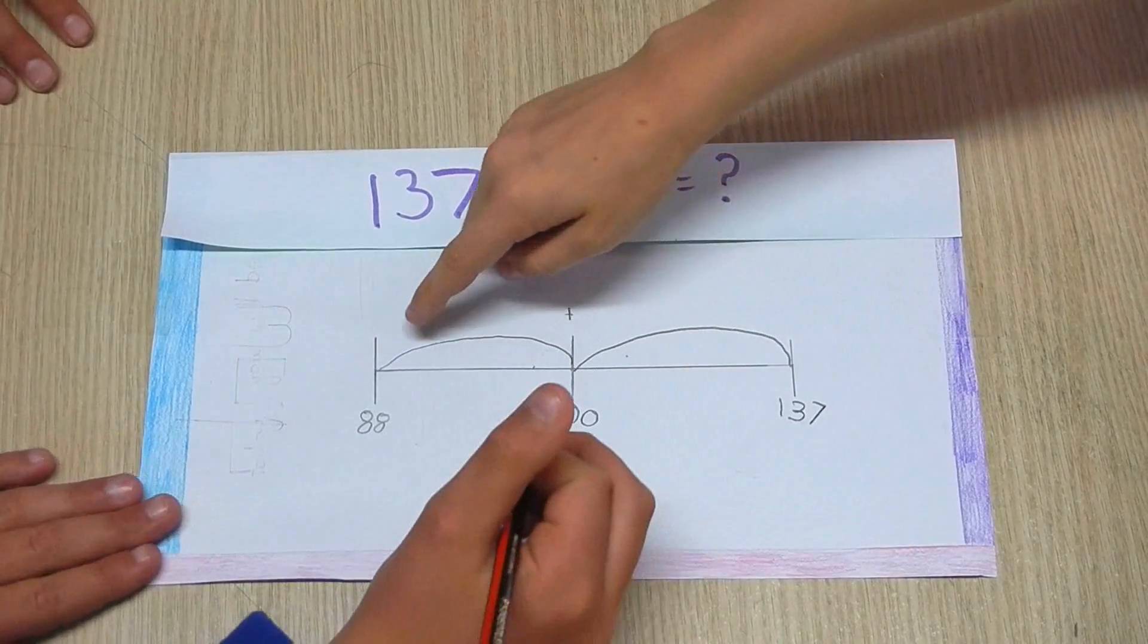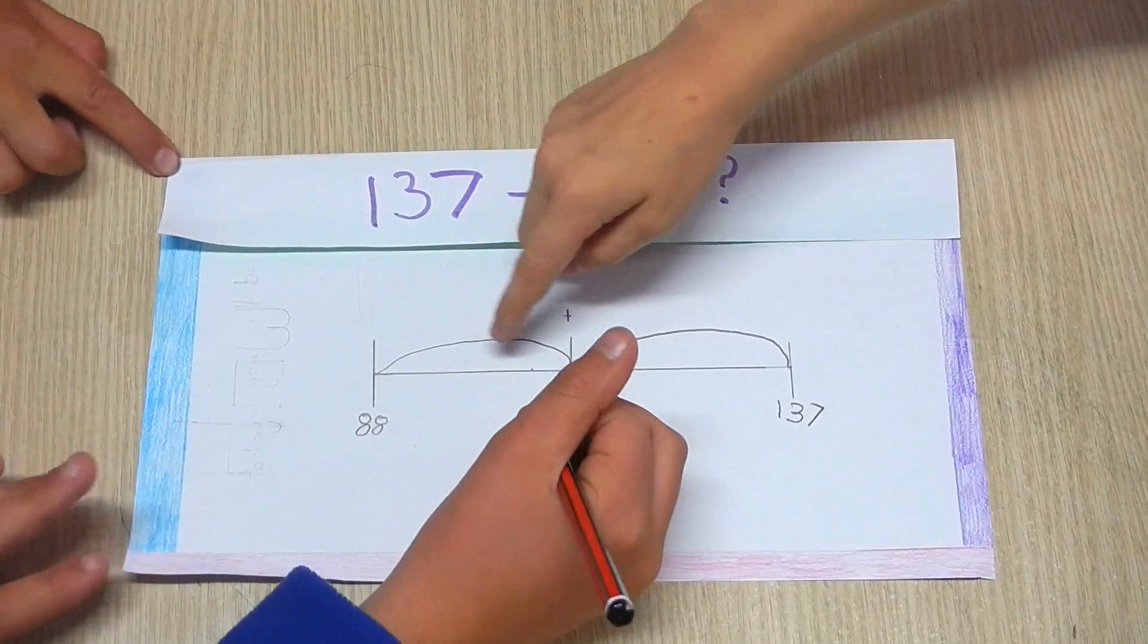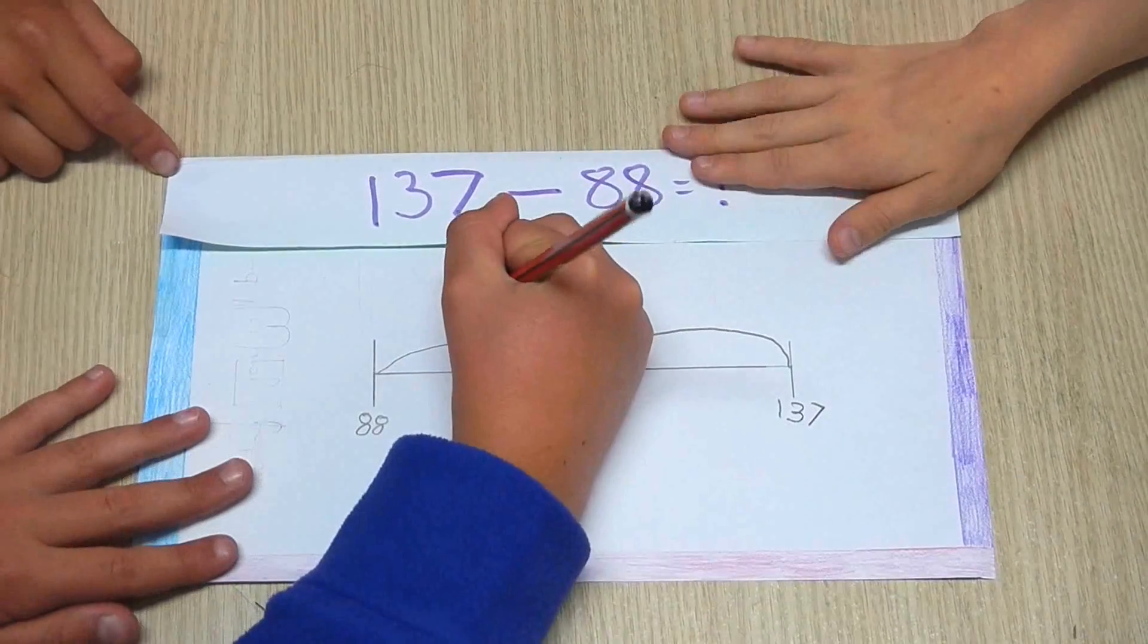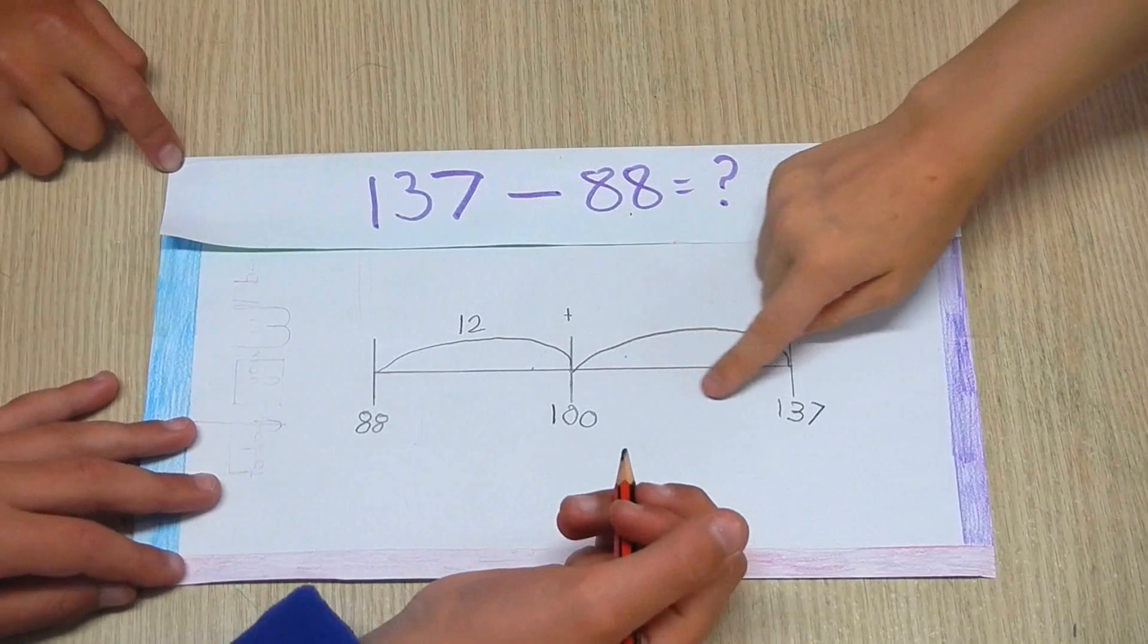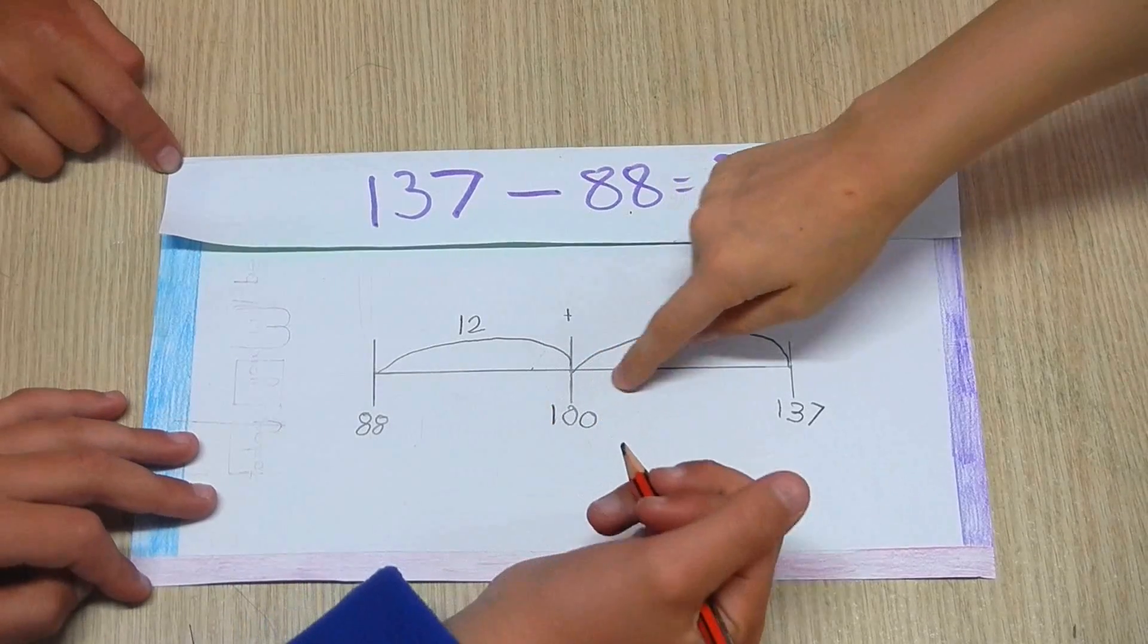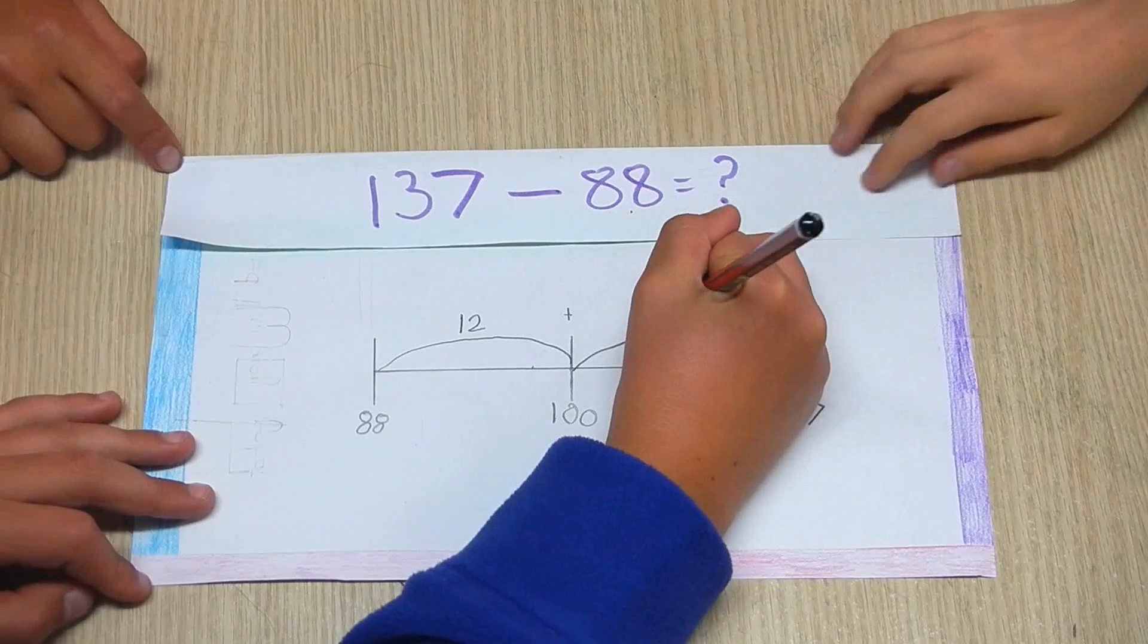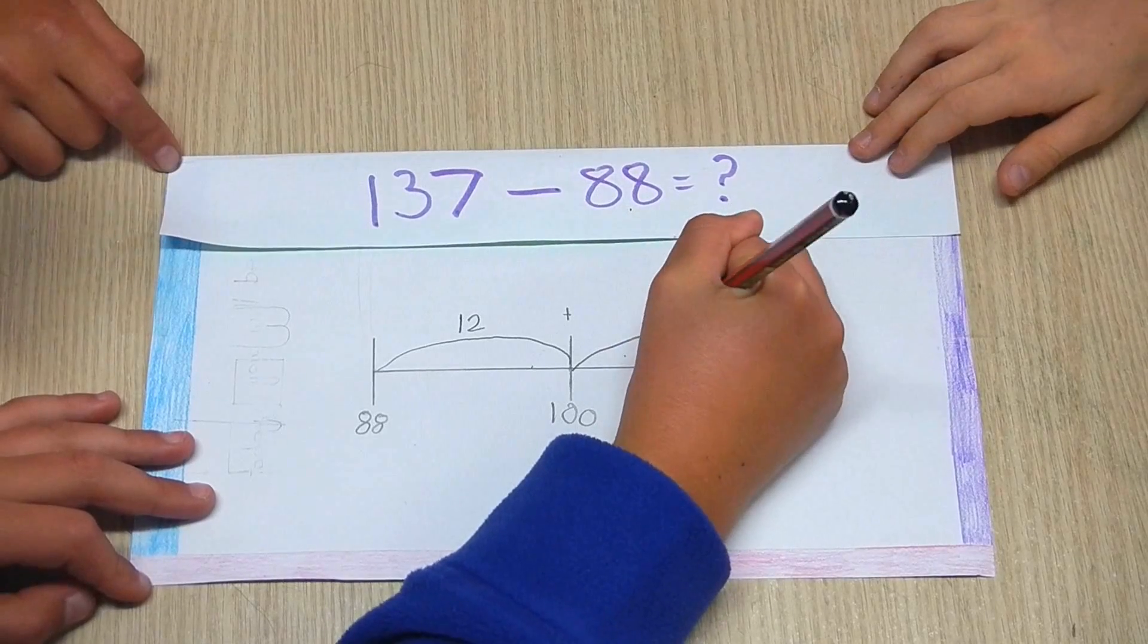Then you've got to add 88 and what to 100? Which would be 12. And 100 to 137, which would be 37.